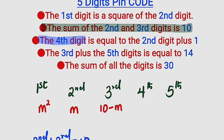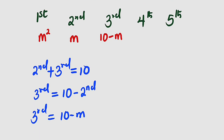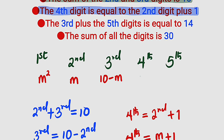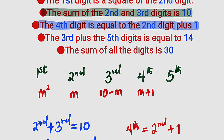From the third statement, the fourth digit equals the second digit plus 1. Since the second digit is m, the fourth digit equals m plus 1. From the fourth statement, the third plus the fifth digits together equal 14, so we will now solve for the fifth digit.